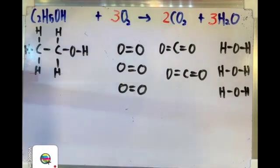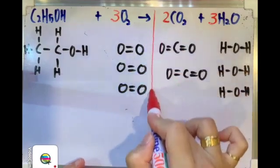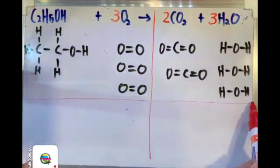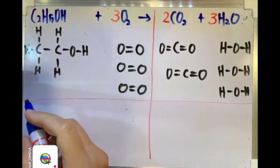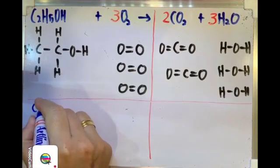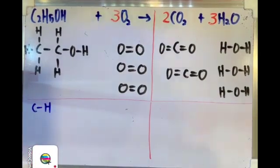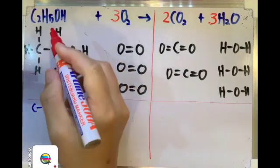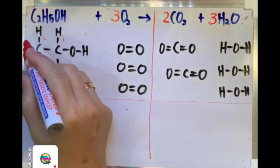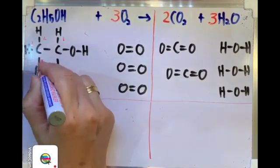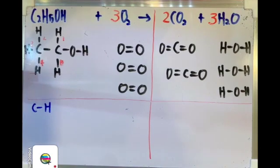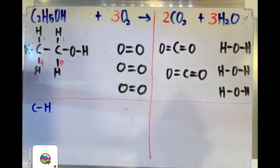Next step, we are going to identify the type of bond energy. Looking at our ethanol, I can see there will be C-H bonds. How many C-H bonds can you see? Starting from here: 1, 2, 3, 4, 5. So altogether there are 5 C-H bonds.